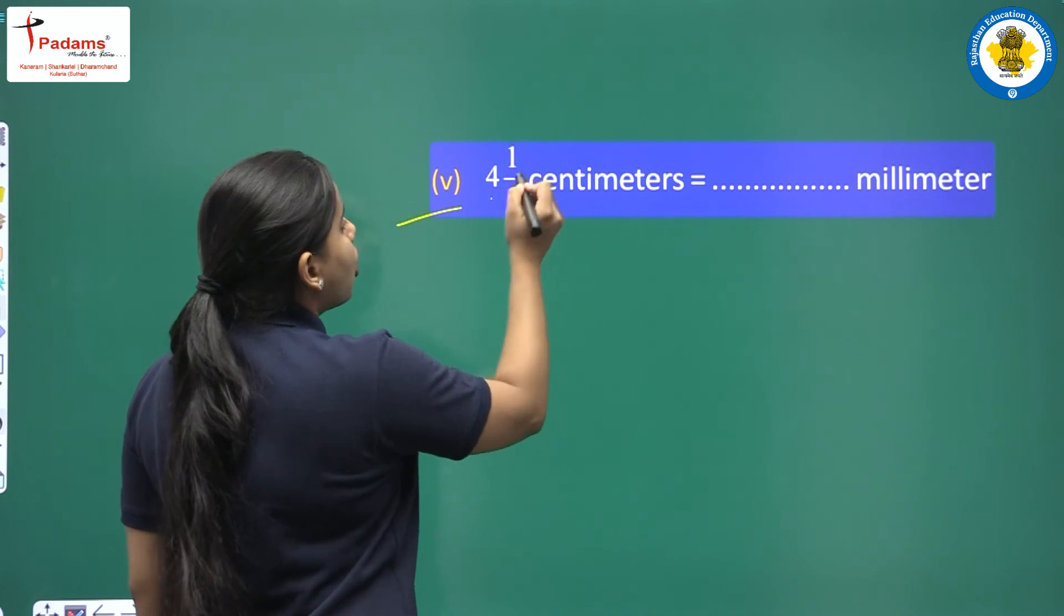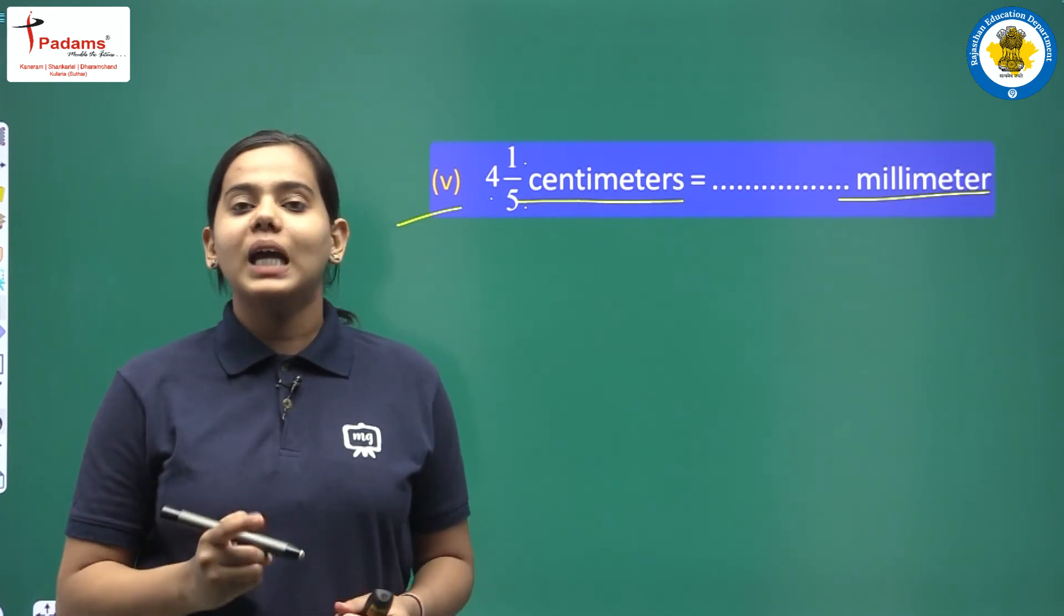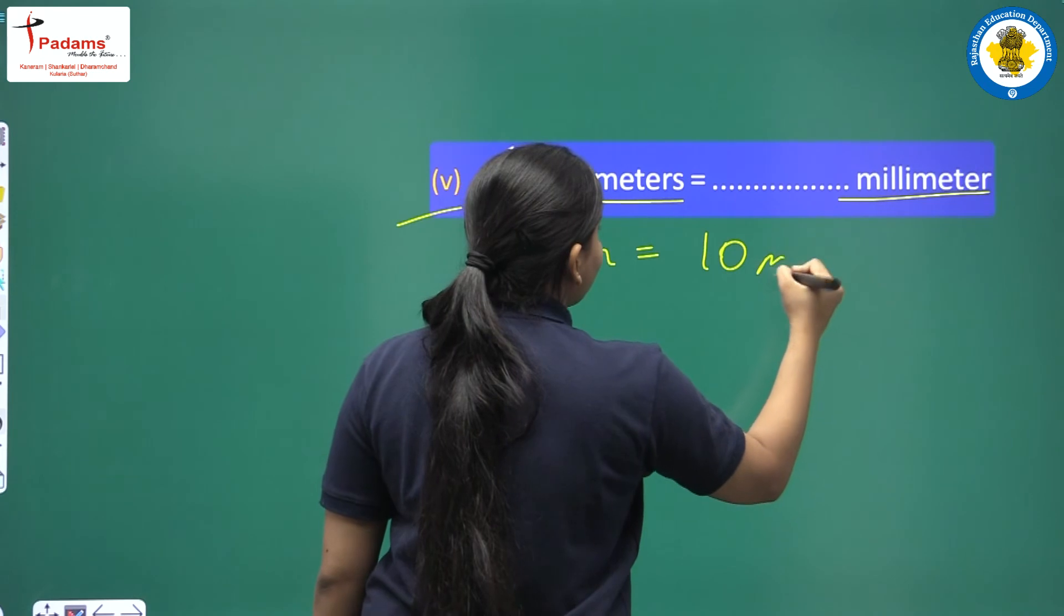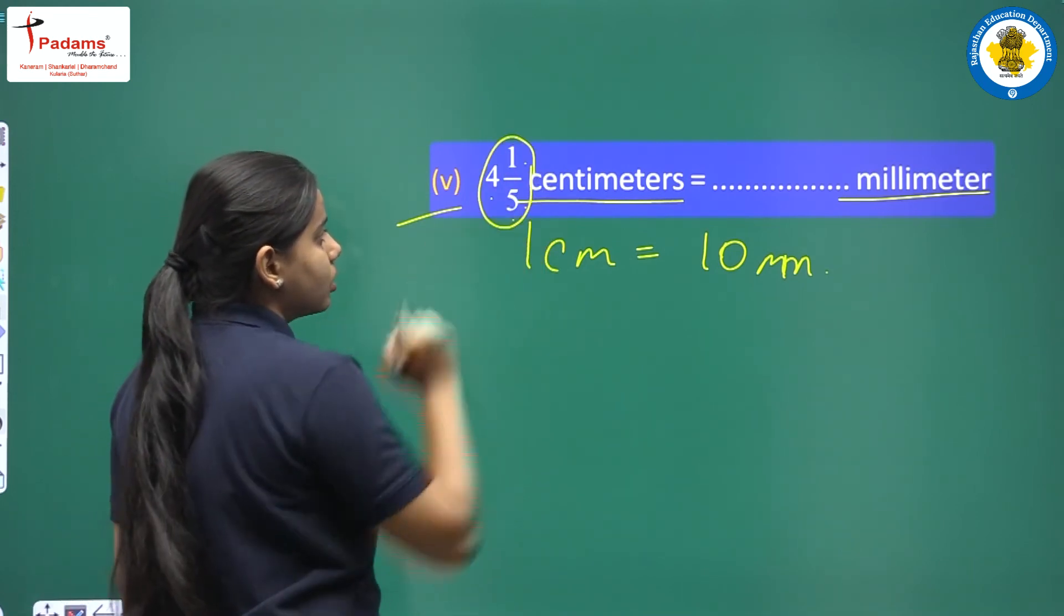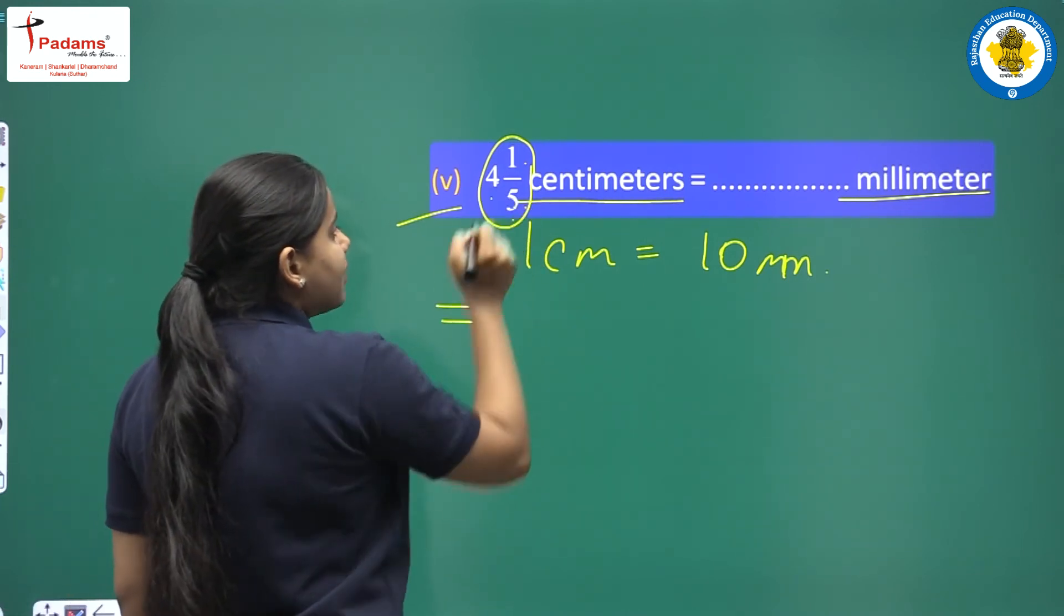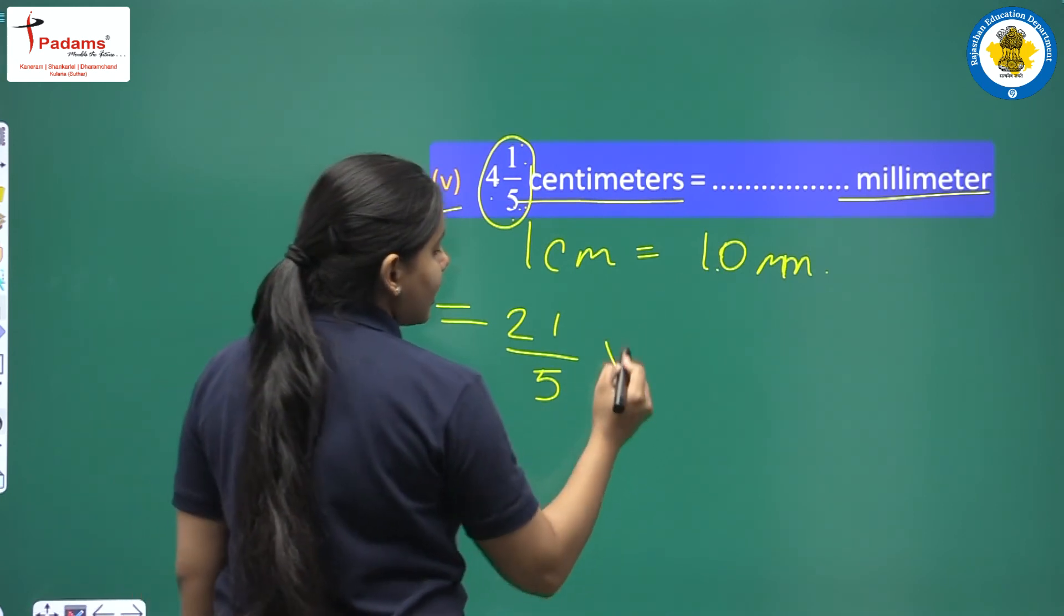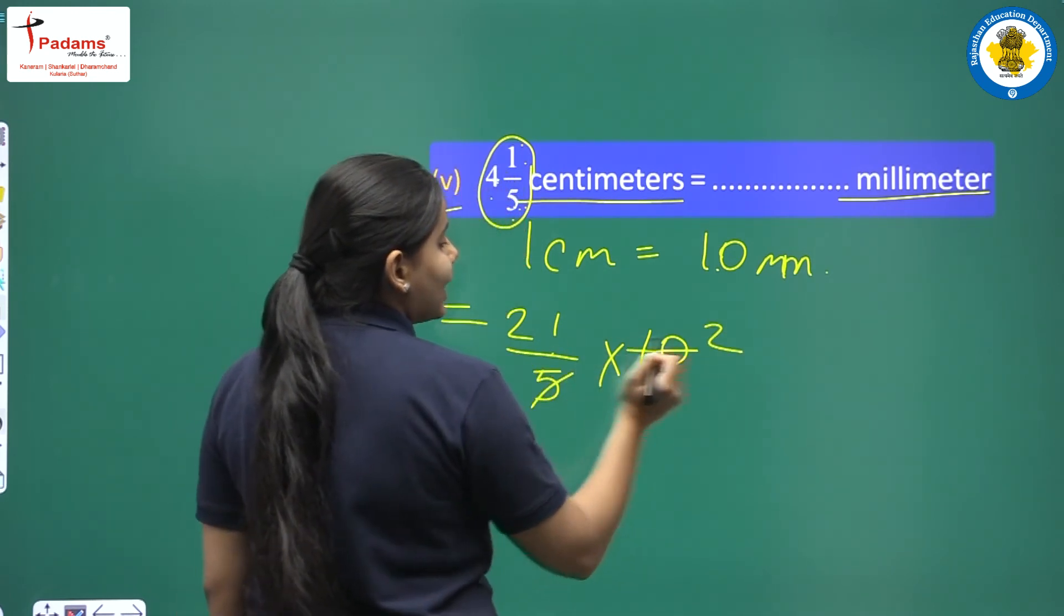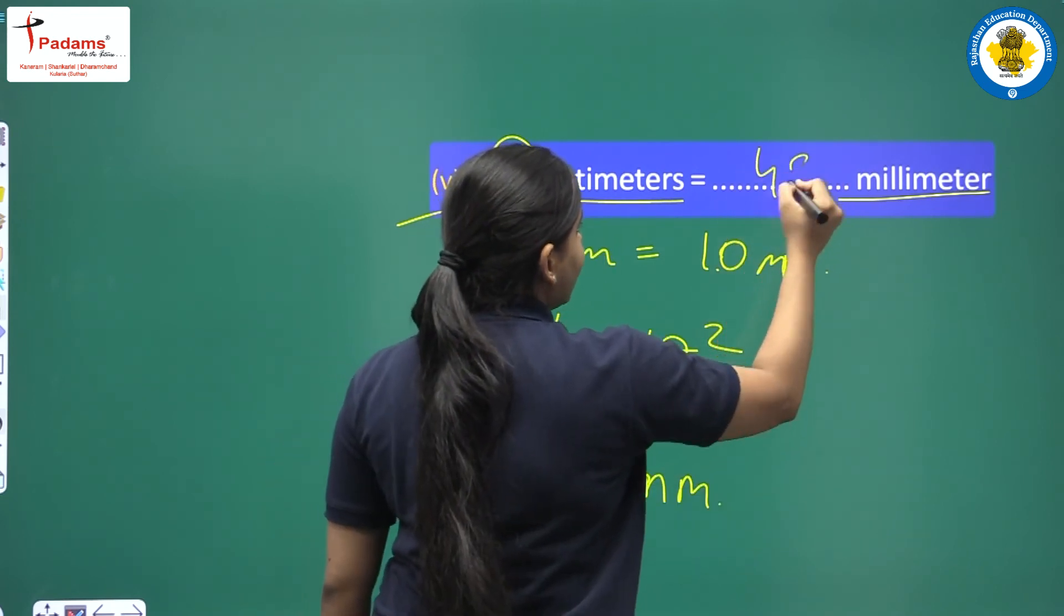This is the fifth part. 4 whole 1 upon 5 centimeter equals dash millimeter. So how we will do that? 4 times 5 is 20. 20 plus 1 is 21. Then denominator is same. That is 5. Now we have to multiply by 10. Multiply by 10. But this 5 will be divided by 10. 5 twos is 10. Now 21 twos. 2 ones is 2. 2 twos is 4. So this is our answer children. That is 42 millimeters. Right?